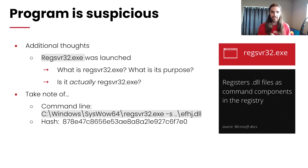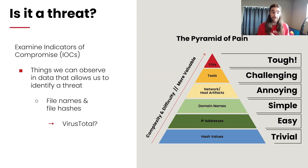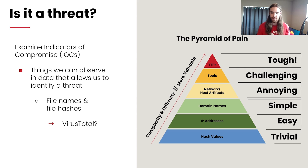At this point we can say Excel did launch a program that is a little suspicious. Is it a threat? Not sure yet — that's what we need to figure out. We can evaluate our indicators of compromise: the observable data that allows us to identify if this is a threat. In our case we have file names and file hashes, which are pretty straightforward to investigate. I have the Pyramid of Pain here — difficulty increases as our artifacts change. Hash values and IP addresses are easy to detect and investigate, so we can take those trivial indicators and leverage open source information. We're going to use VirusTotal.